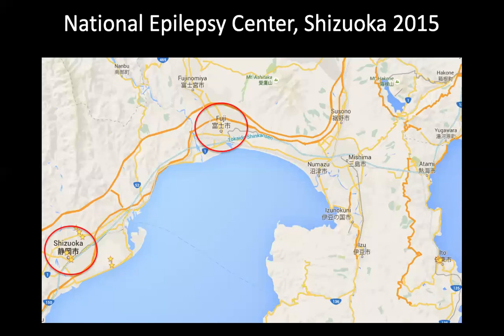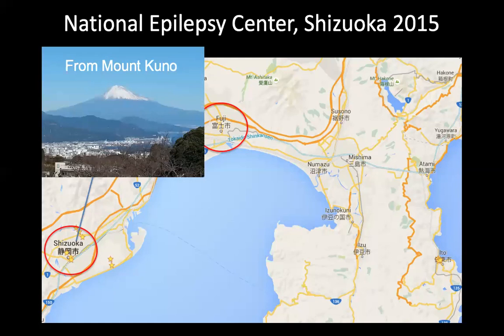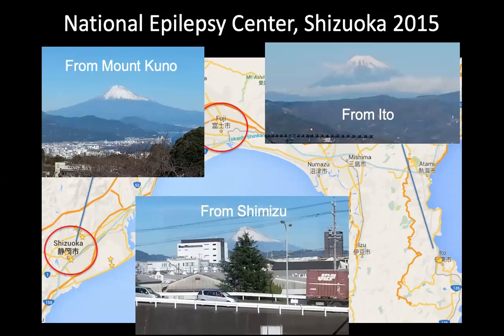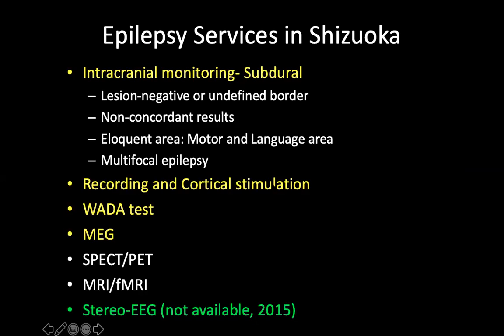I first learned intracranial recording in 2015 in Shizuoka, where they mainly do subdural and depth electrodes. Just as we can view Mount Fuji from different angles, for epilepsy we have to look at the epileptogenic zone from different angles as well. In Shizuoka they perform subdural EEG, cortical stimulation, WADA test, and MEG. They were not doing stereo EEG in 2015, but I heard they are starting to do stereo EEG now.